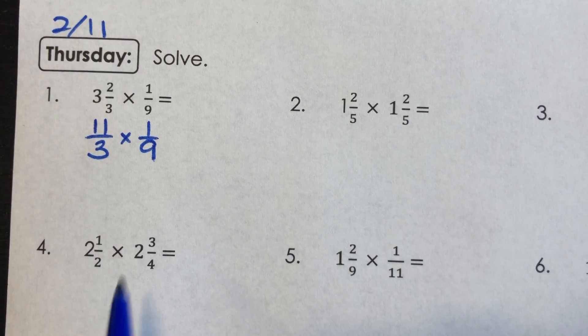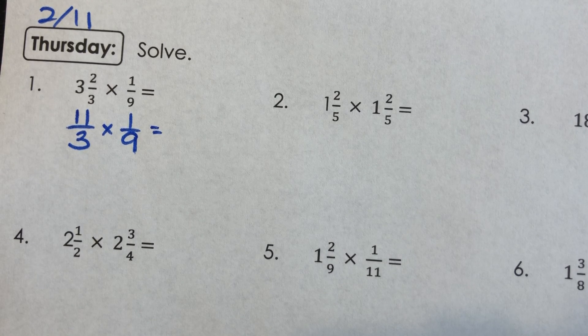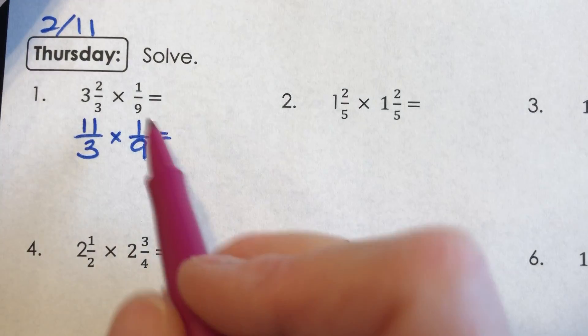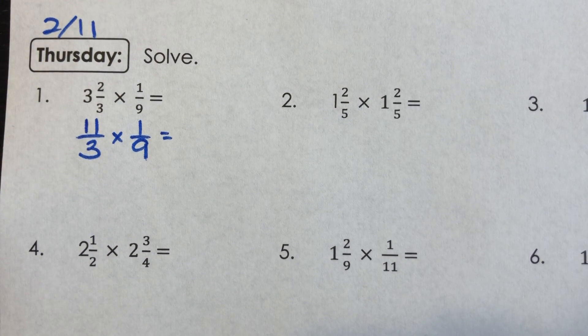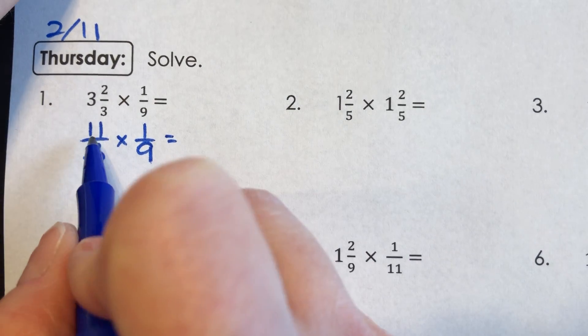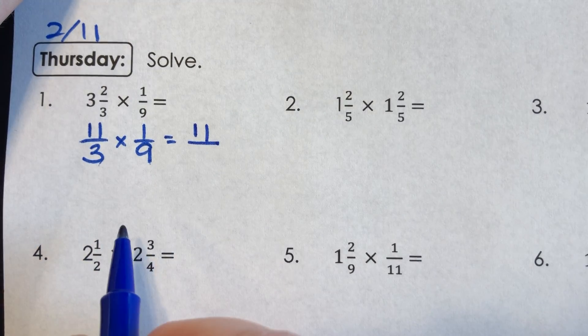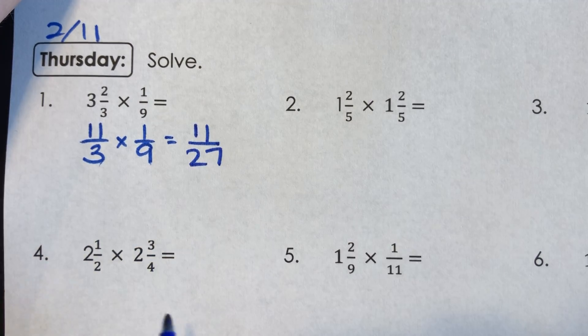Now just like before, I'm going to check this out and see if there's any way I can cross simplify anything. And when I look at this, like 9 and 11, I can't do anything. There's not a number other than one that goes into both of those. And 3 and 1, I can't do anything. So I'm going to go ahead and multiply my numerators. 11 times 1 is 11. And multiply my denominators. 3 times 9 is 27.